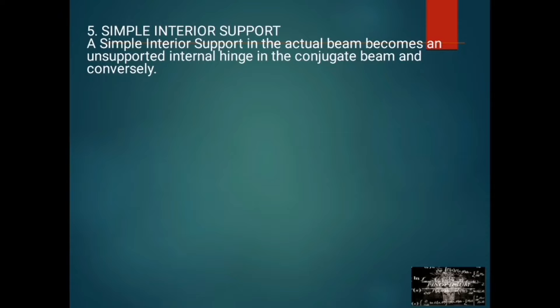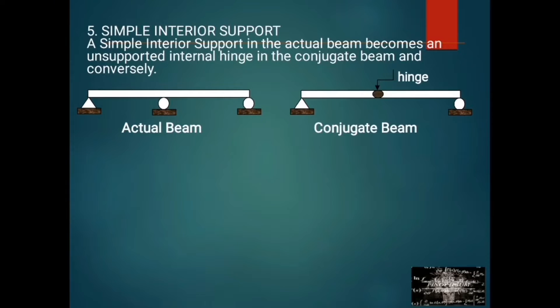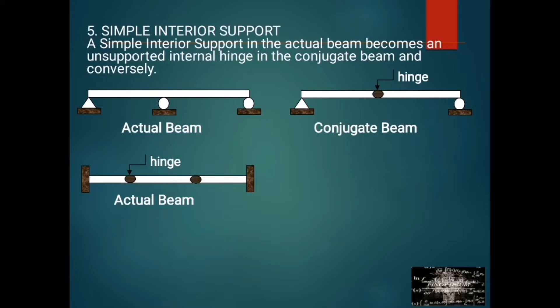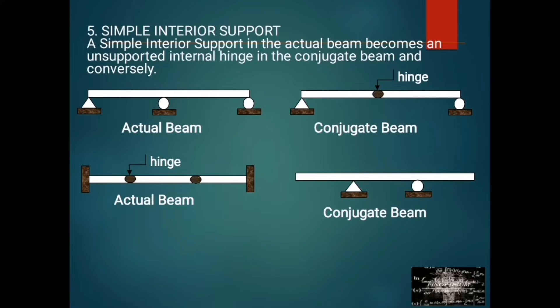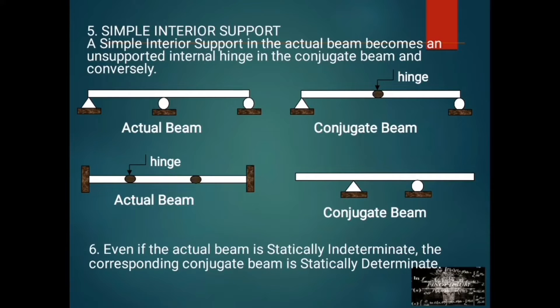And conversely, for the actual beam and conjugate beam: the interior roller support becomes an internal hinge in the conjugate beam, and the internal hinge in the actual beam becomes a pin or roller in the conjugate beam. Number 6: even if the actual beam is statically indeterminate, the corresponding conjugate beam is statically determinate.